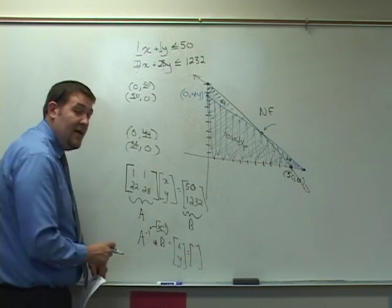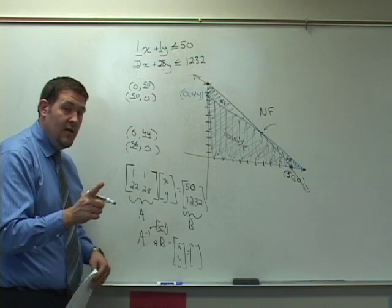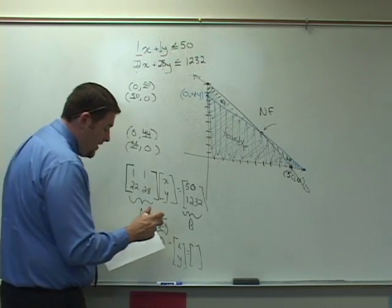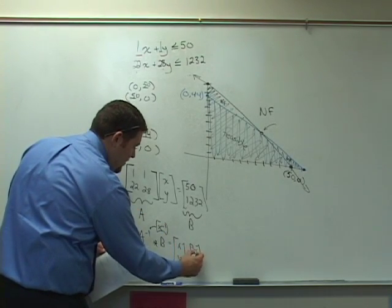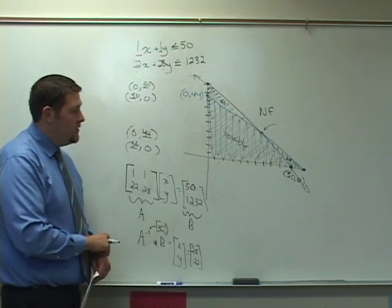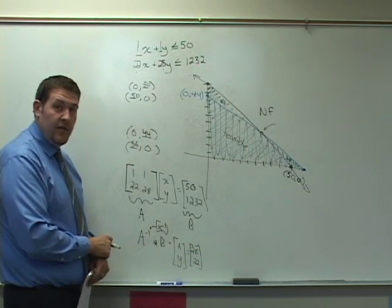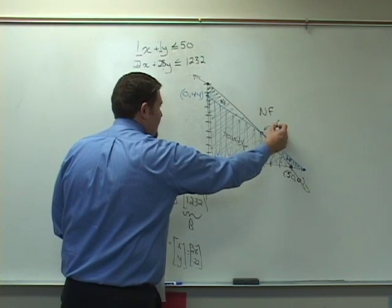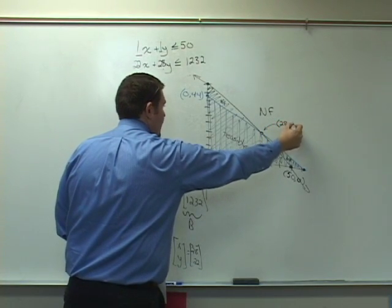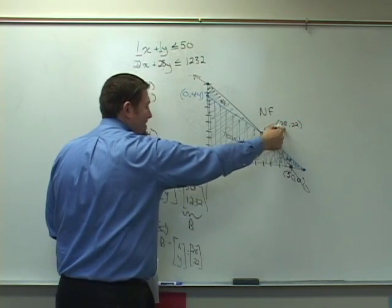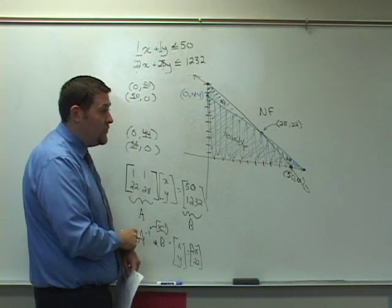If you want to pause and try that right now, you may do so. But the answers to this end up being that x is going to be 28, and y is going to be 22. So x is 28, and y is 22. Well, that means that this x is supposed to be 28, and y is 22 here. 28 apple trees, and 22 peach trees.